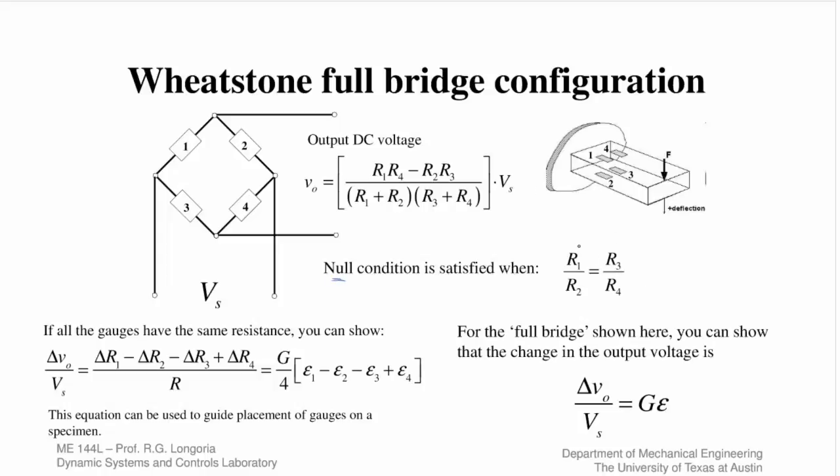You might have imbalances here, so sometimes you have circuitry that will balance the bridge and give it a null condition. That way it's zero when there's no forces applied. If the ratio of resistance one to two is equal to the ratio of R3 to R4, then this will give you a zero output. Otherwise, you need to have a balancing circuit that will make the zero value when there's no forces applied.